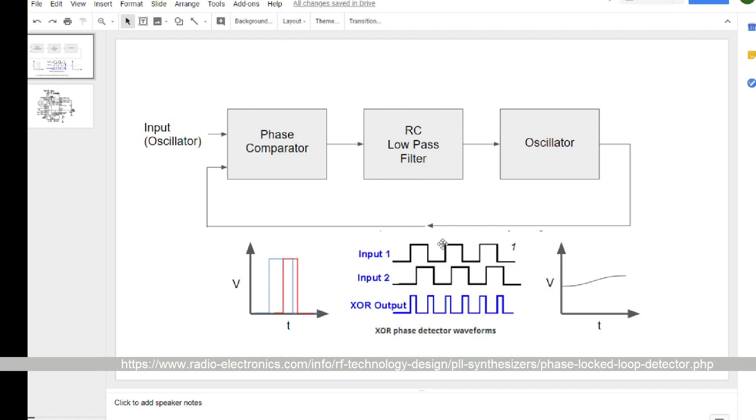And then in a future video, we'll talk about the multiplication and division that can happen here. But this is the basic gist of it, right? You've got the comparator, which compares two signals coming in. The output is converted to a DC voltage, which controls the oscillator. So with these components, you have a phase-locked loop.